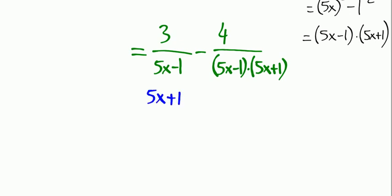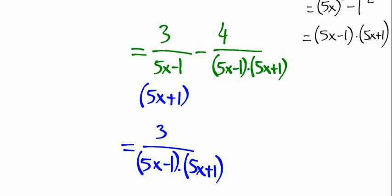I need to multiply the first fraction by 5x plus 1 in order to have the same common denominator. So 3 over 5x minus 1 times 5x plus 1.